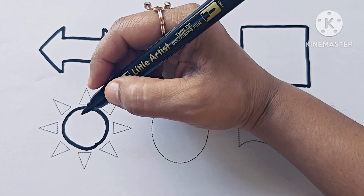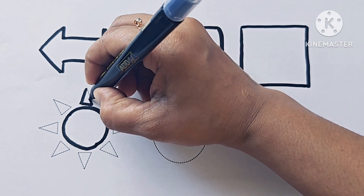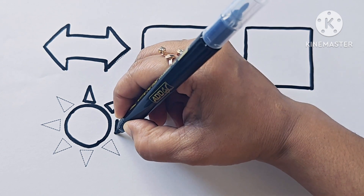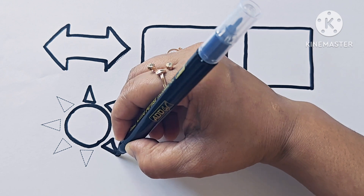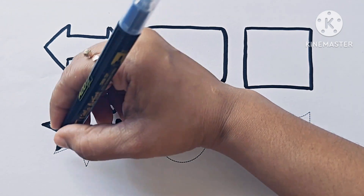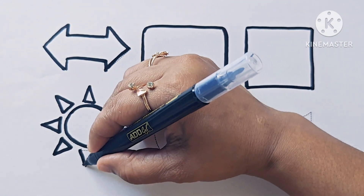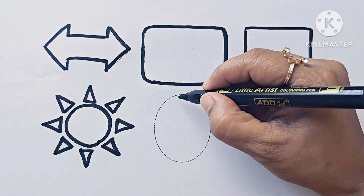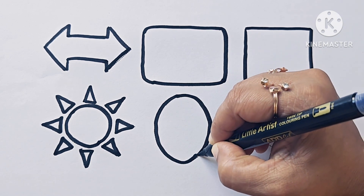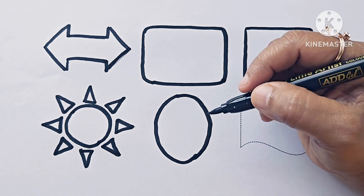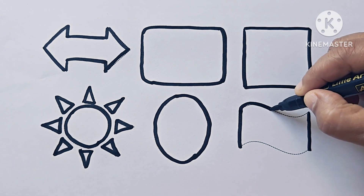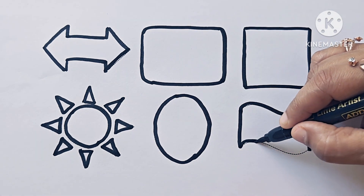This is sun. Sun is made of triangles and a circle. And this is triangle. This is oval. This is wave — this is also a symbol.